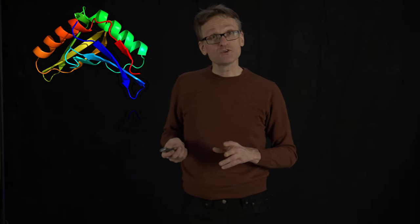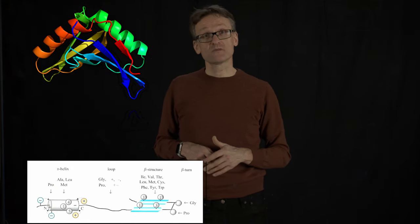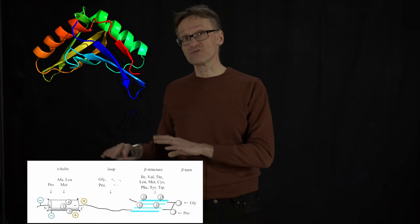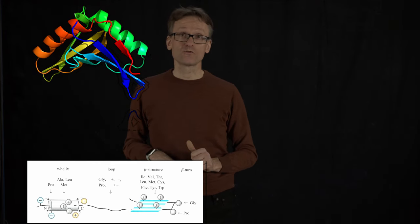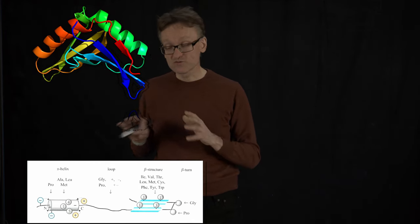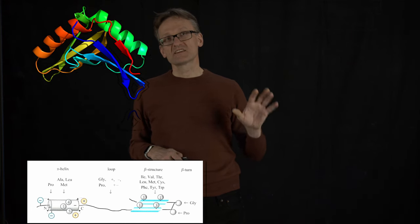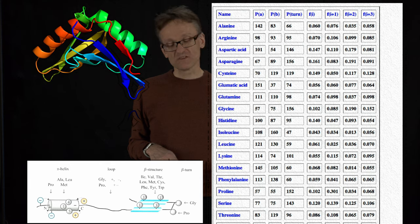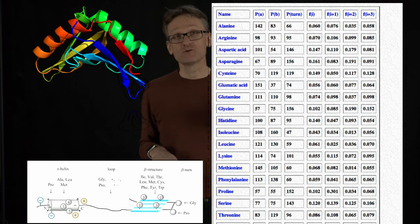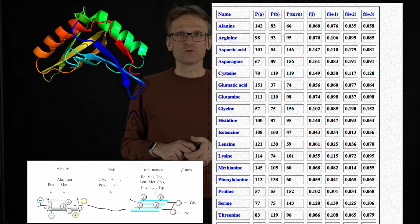The idea with Chou-Fasman is that they're using all the information that we've talked about previously in the class, free energies, probabilities of forming turn. It was a beautiful method. It was the first bioinformatics method. The only problem is that it's quite labor-intensive to sit and do all these diagrams. You can do it. You can even do it in Excel.